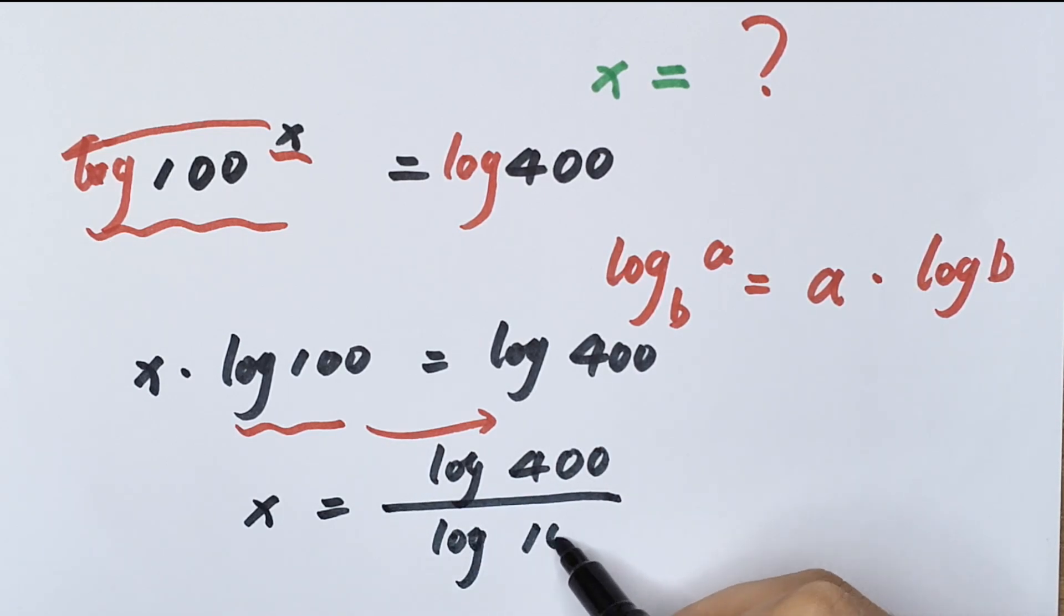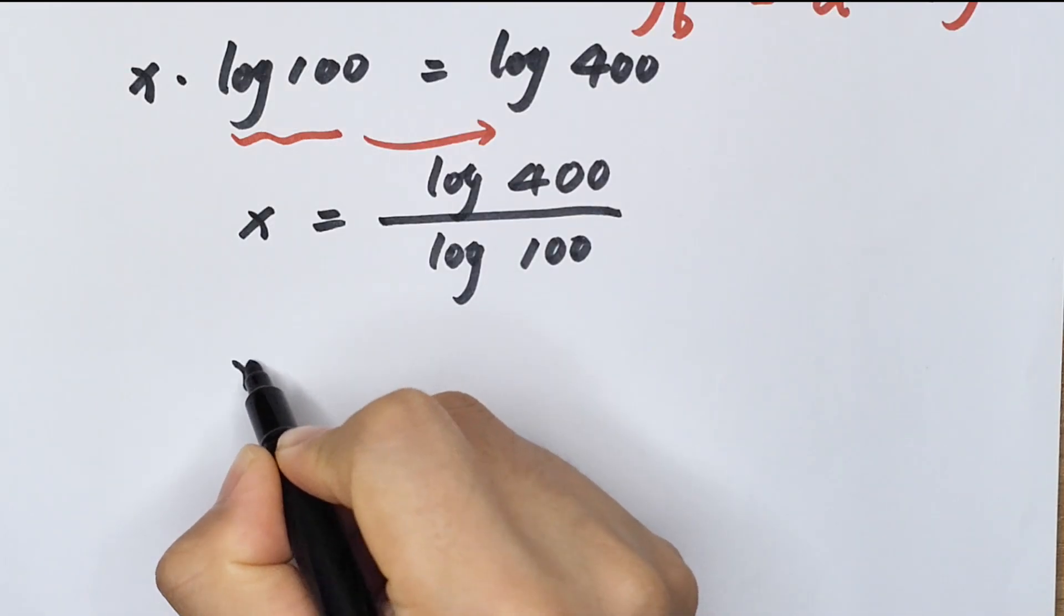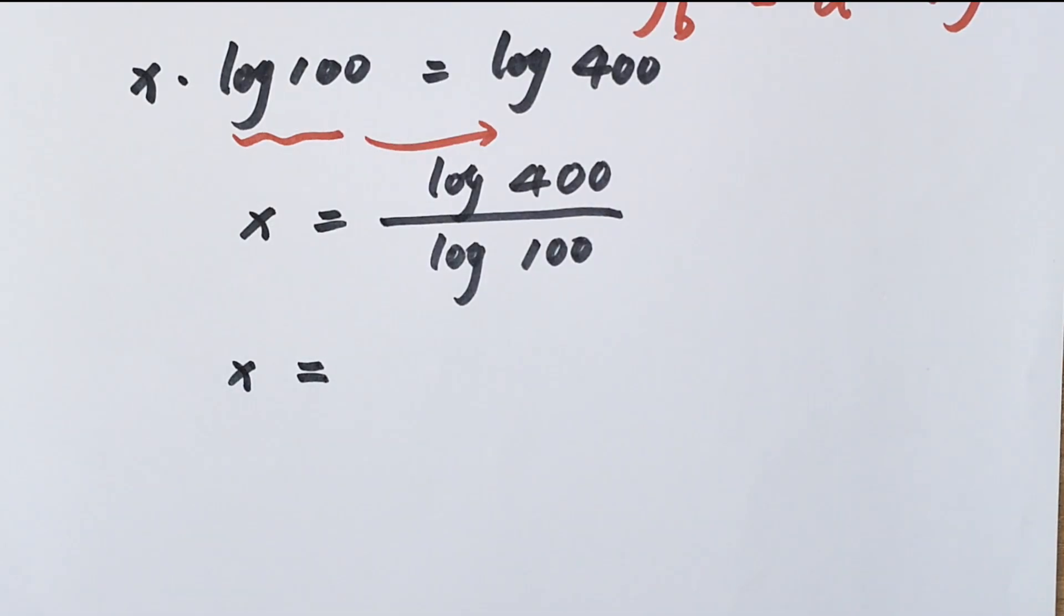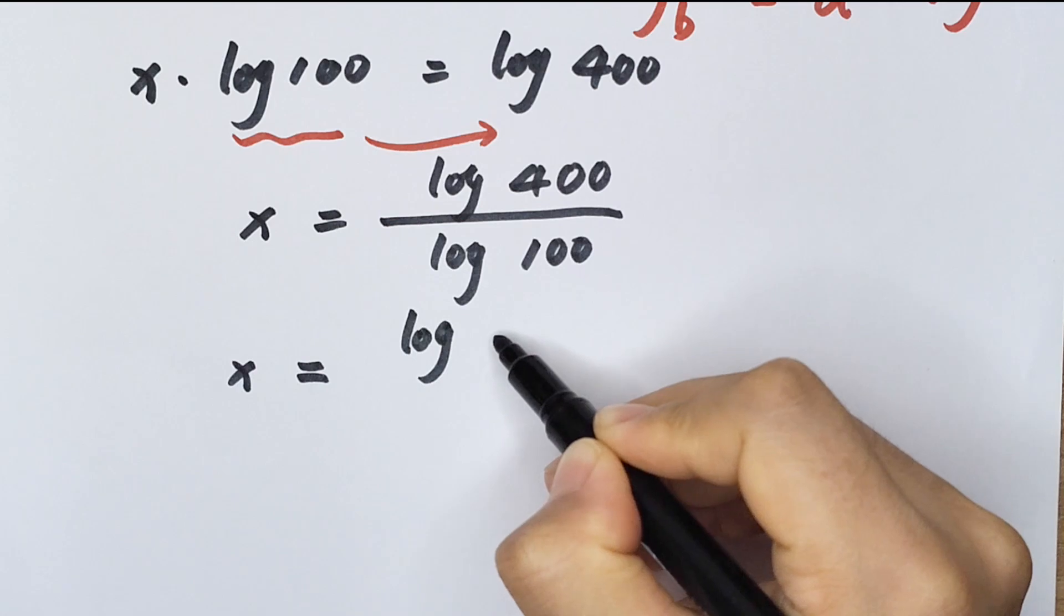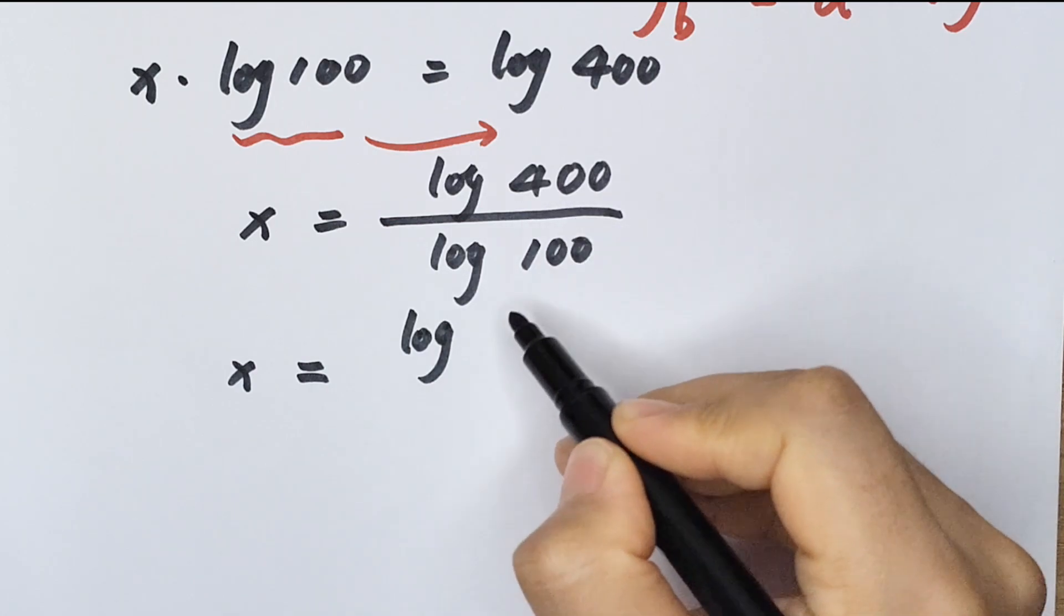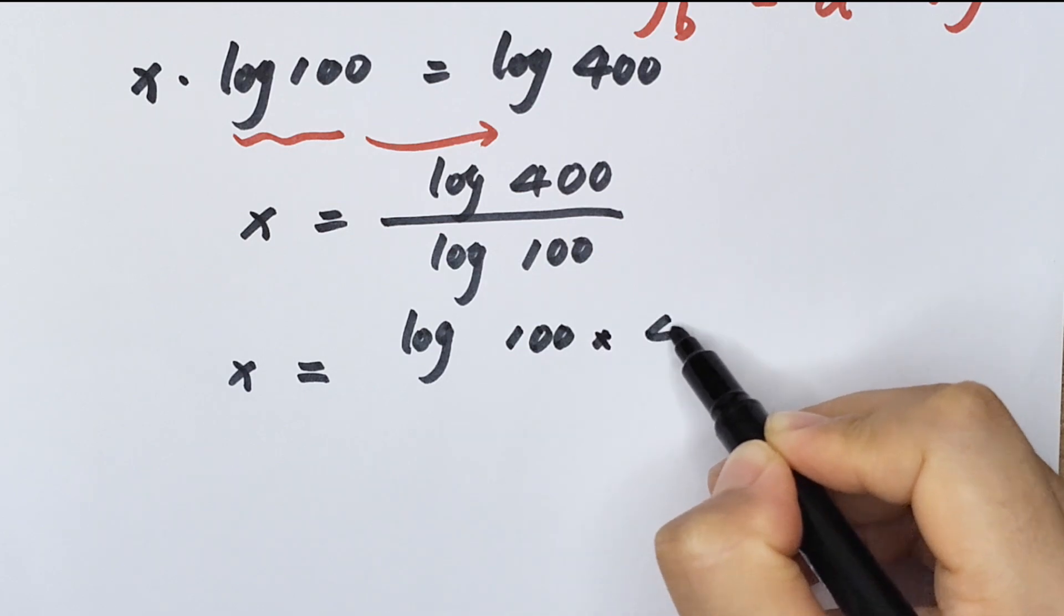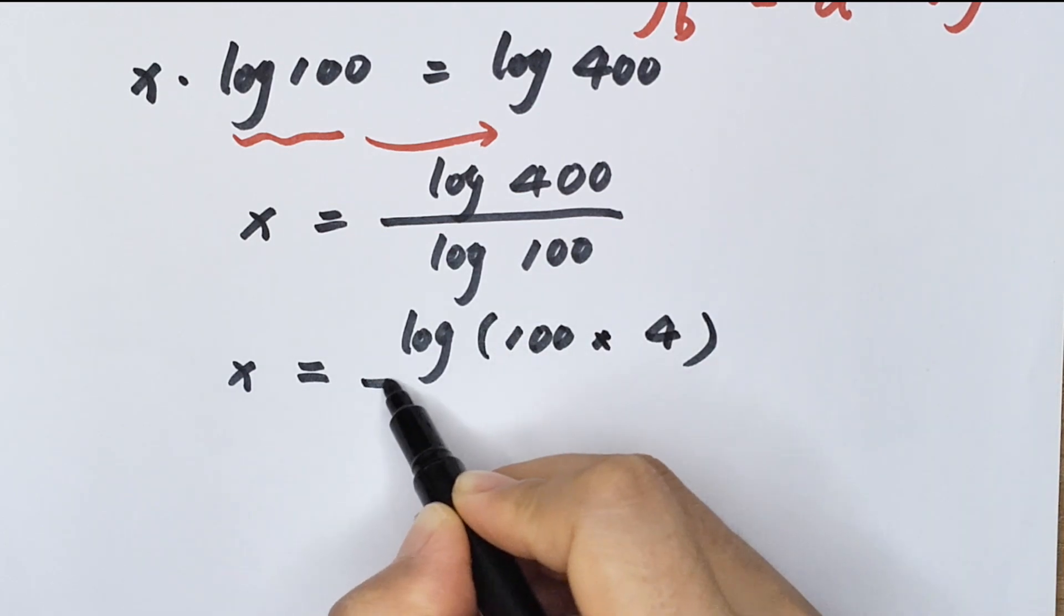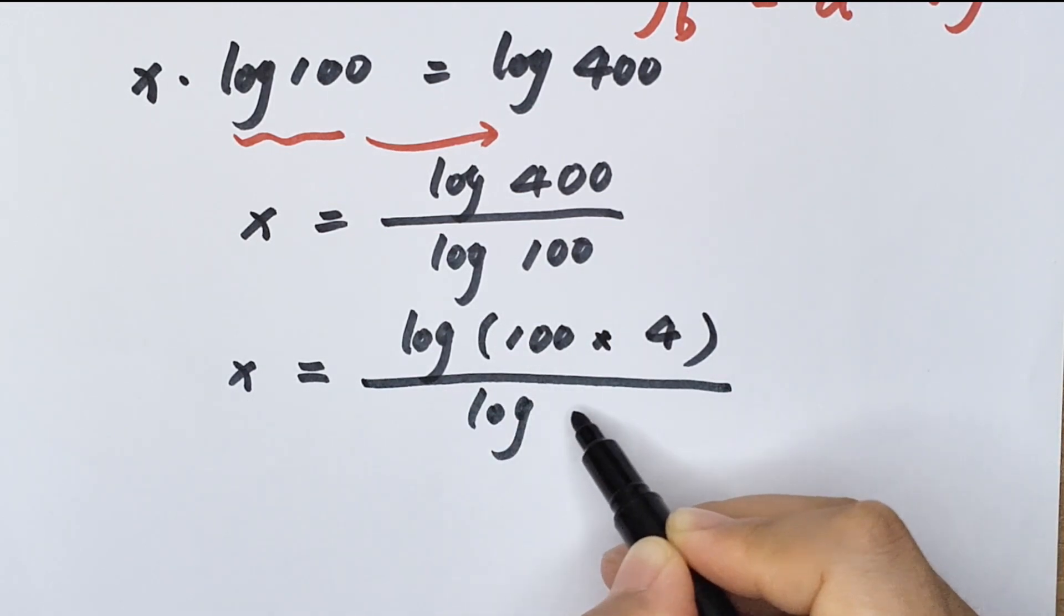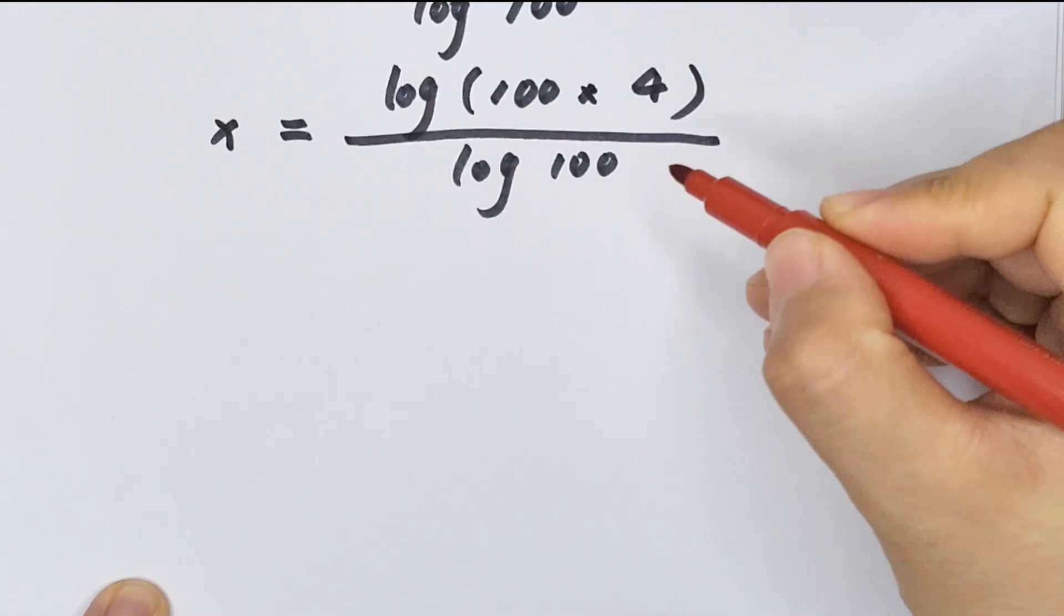x equals log(400) - which is the same as 100 times 4 - over log(100). Now we apply the formula that log(a times b) equals log(a) plus log(b).